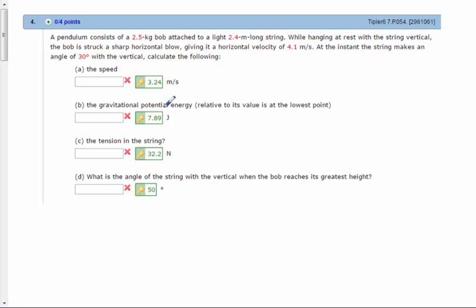We want to find the speed, the gravitational potential, and the tension of the string. Once we're done with that, we will find the maximum angle that the bob will reach before the velocity reaches zero.